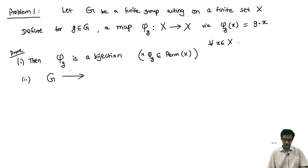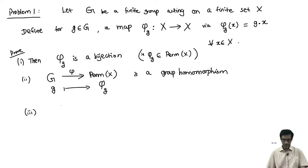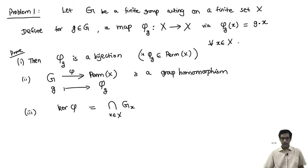Second, the map φ from G to Perm(X), sending each group element G to φ_G, is a group homomorphism. Third, the kernel of this homomorphism — which is a normal subgroup of G — is nothing but the intersection of the stabilizers of all elements of X.